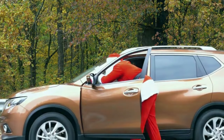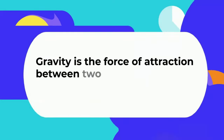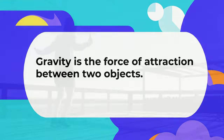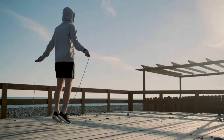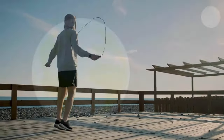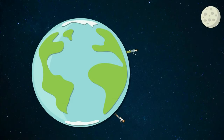Gravity is the force of attraction between two objects. It's a fundamental force in the universe that causes every object to be attracted to every other object. When you jump upward, you can feel the force of gravity pulling you back to Earth. The greater the mass of an object, the greater the force of gravity.